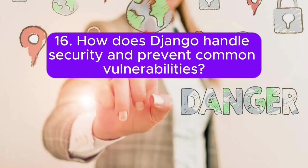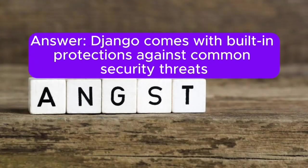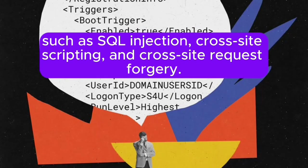Question 16: How does Django handle security and prevent common vulnerabilities? Answer: Django comes with built-in protections against common security threats, such as SQL injection, cross-site scripting, and cross-site request forgery.